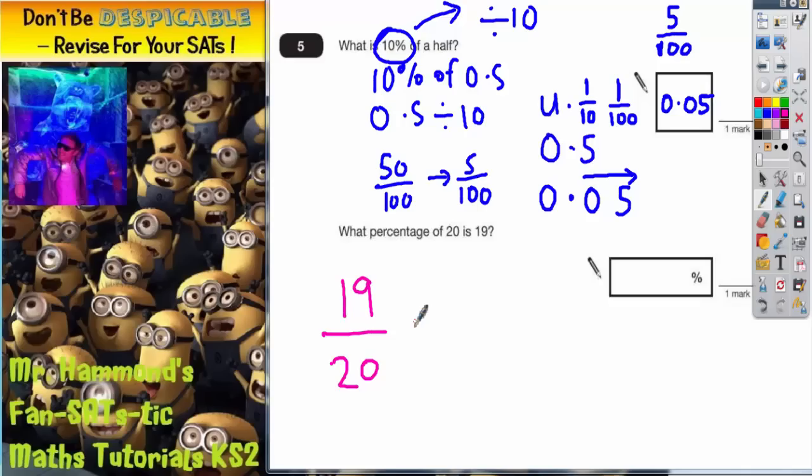Now what we need to do to turn into percentage is to turn it into a fraction out of a hundred. So let's write out of a hundred alongside. Now what we need to do is figure out what the multiplier is to get from 20 to 100. Well, to get from 20 to 100 we are multiplying the denominators by five. So we've got to do exactly the same multiplier on the top for the numerator. So we need 19 times five.